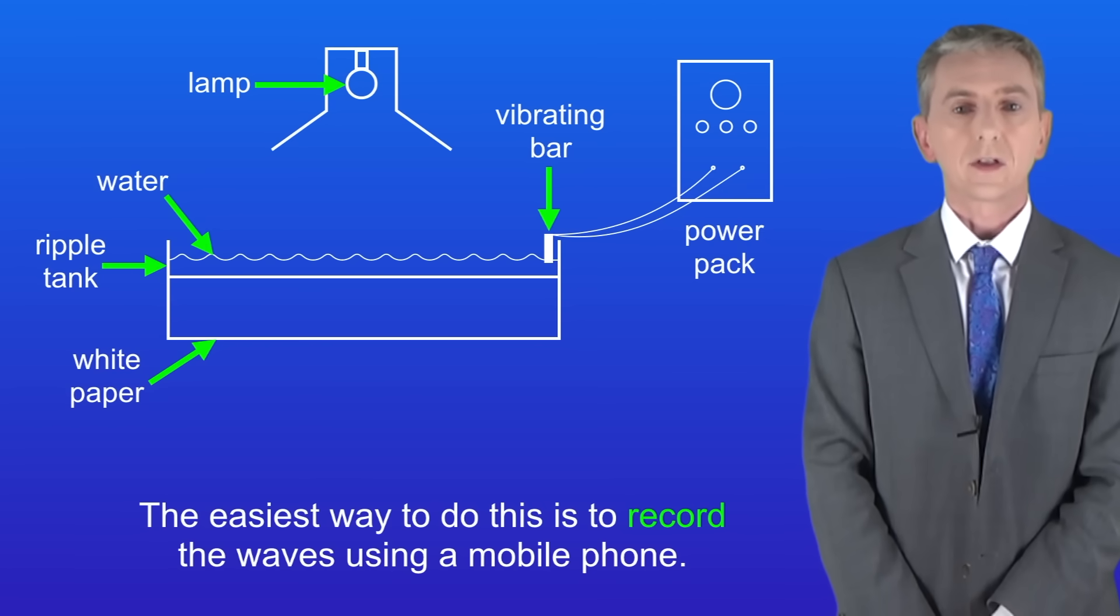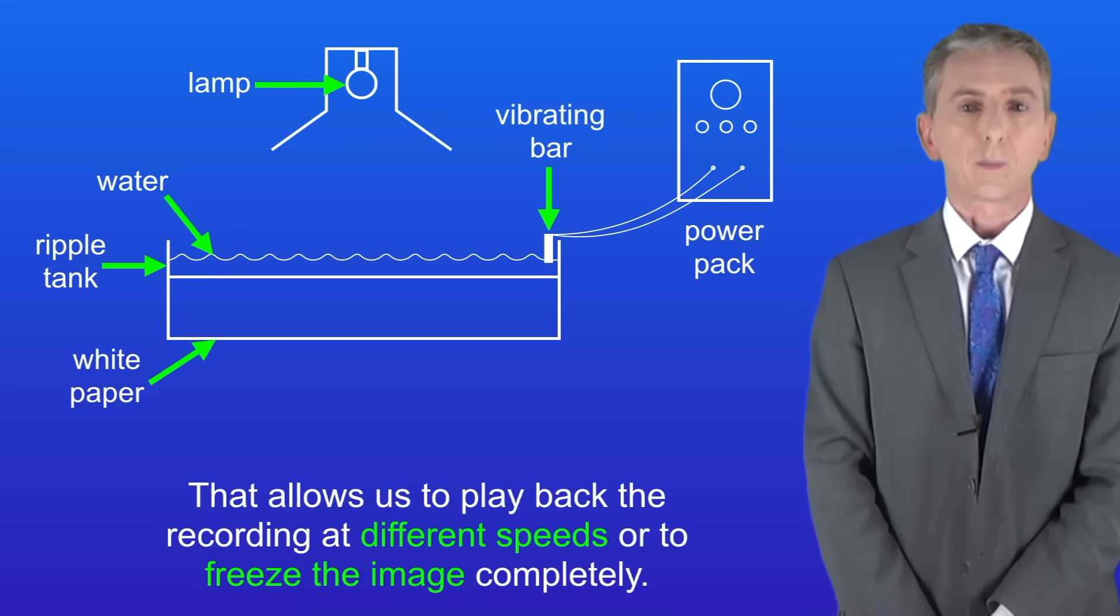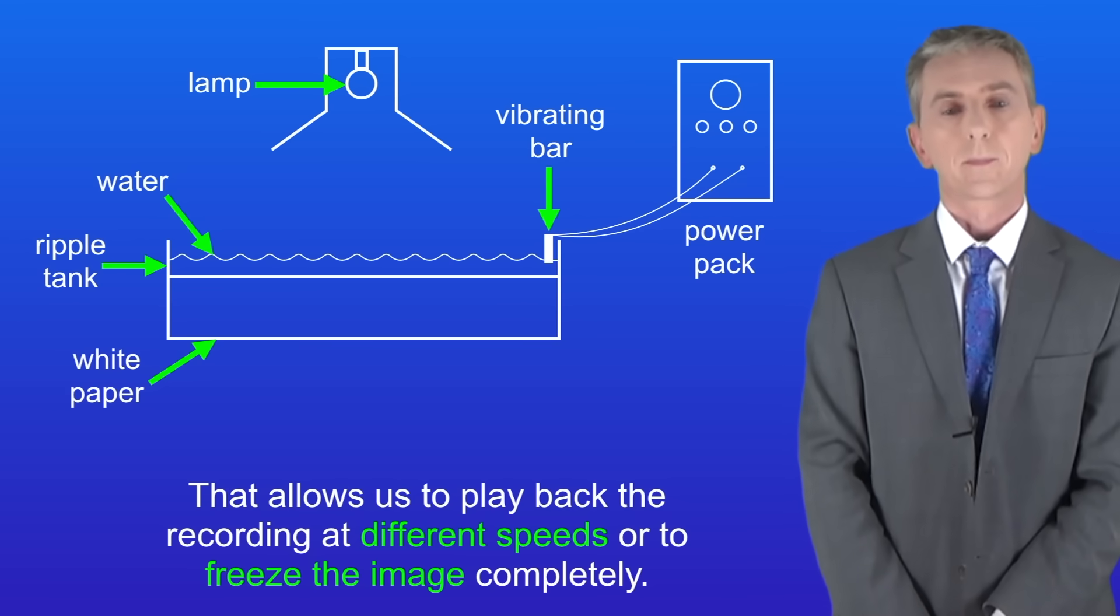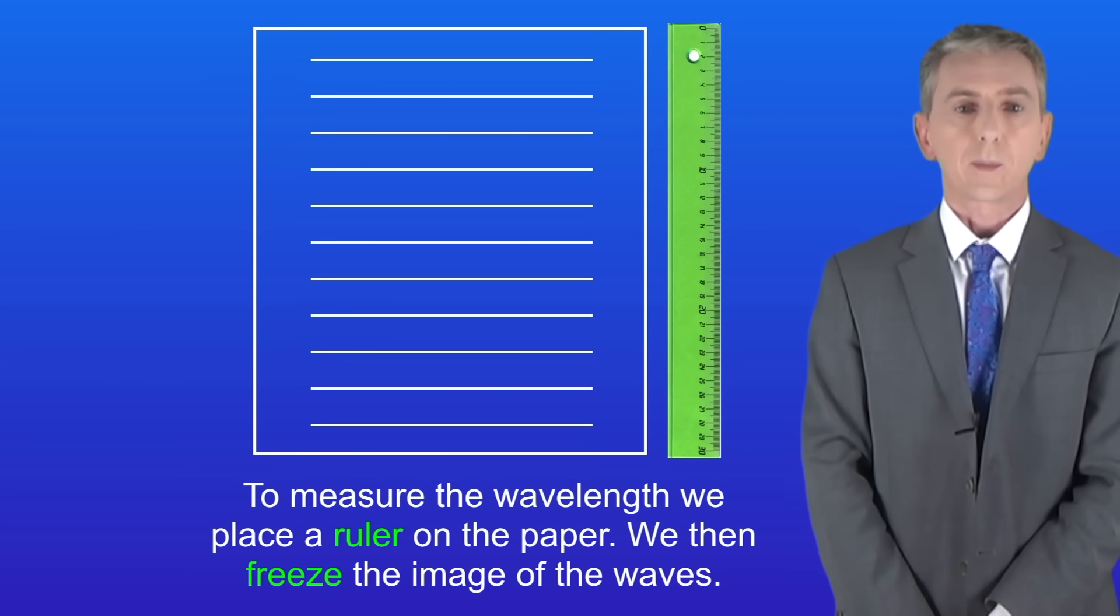The easiest way to do this is to record the waves using a mobile phone. That allows us to play back the recording at different speeds or to freeze the image completely. We're going to start by measuring the wavelength of the waves. This is quite straightforward. To measure the wavelength we place a ruler on the paper. We then freeze the image of the waves.